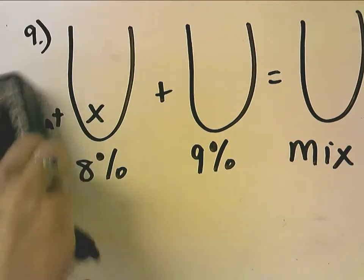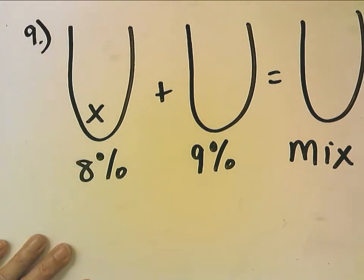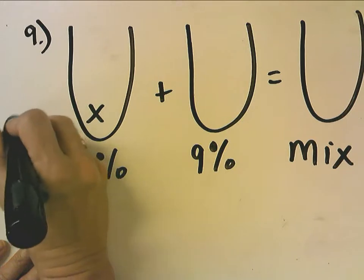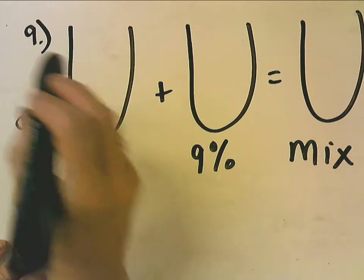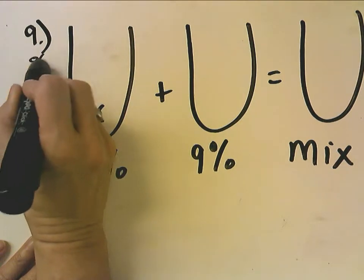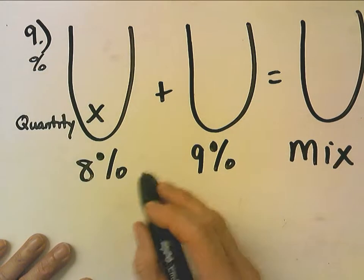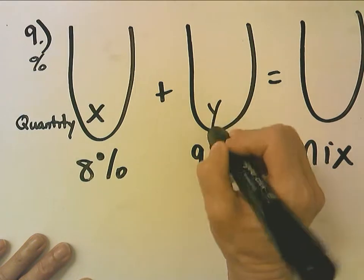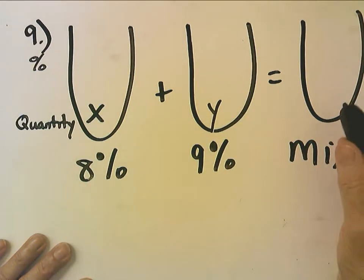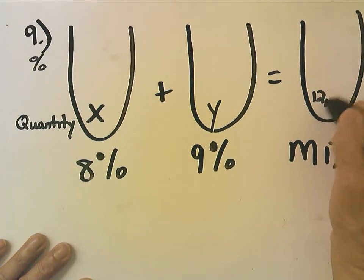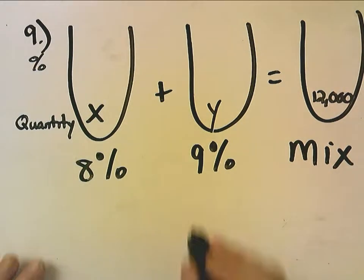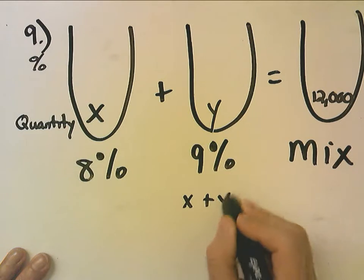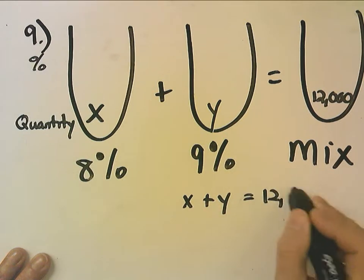Let's make that a little clearer. So your quantity, again, like the other ones, is in the bottom. And this is my percent. So I don't know how much 8%, I don't know how much 9%, but it tells me the total I'm investing is $12,000. So my quantity equation is X plus Y equals $12,000.